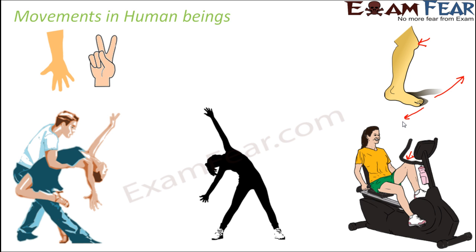The same movement is seen in gymnastics. When somebody does gymnastics, it is not only the limbs — not only the hands and legs — that have flexibility, but other parts of the body also move. For example, the neck moves and the waist moves. But did you notice something in all these examples? Whether you look at cricket, badminton, dance, treadmill, or gymnastics, there are some specific parts of our body which we can move, while some other parts cannot move.